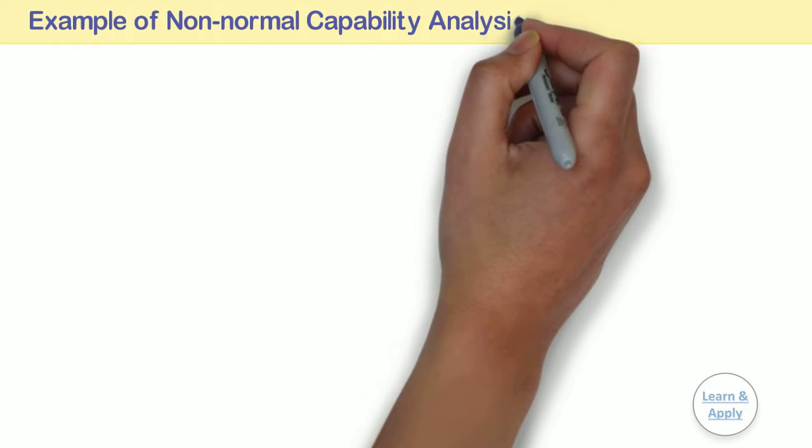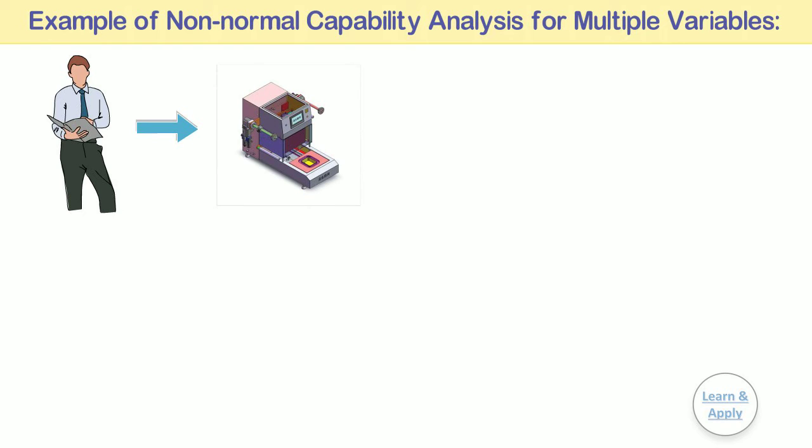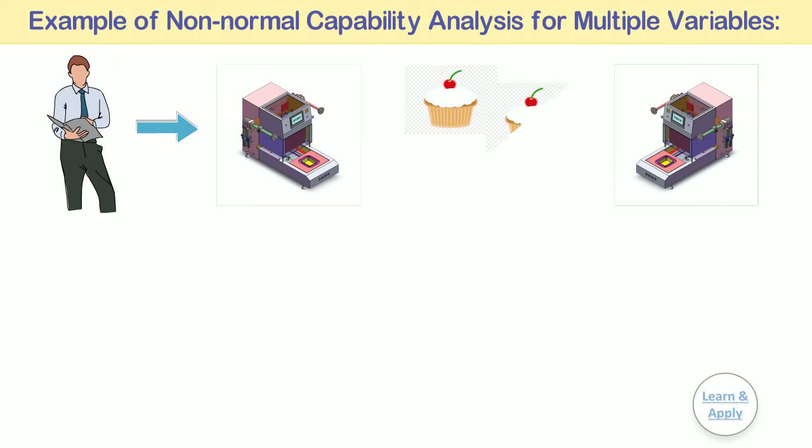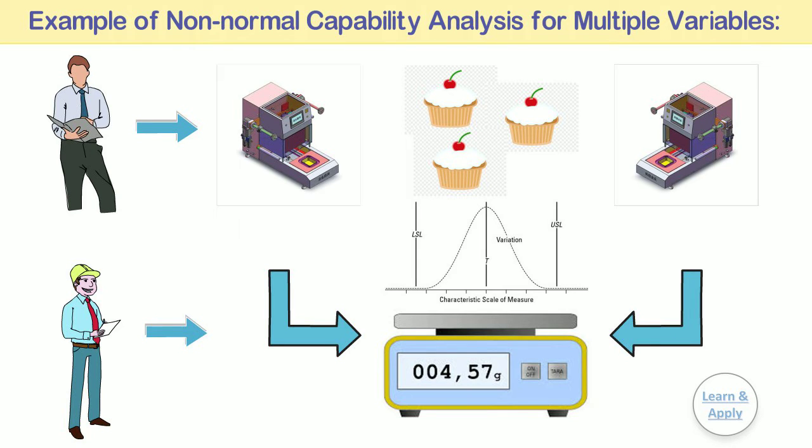Example of non-normal capability analysis for multiple variables. A manufacturer uses two machines to package a frozen food. The process is in control and the quality engineer wants to assess whether the amount packaged is affected by the use of two machines. The specifications for the weight of the frozen food packages are 27 grams to 35 grams.